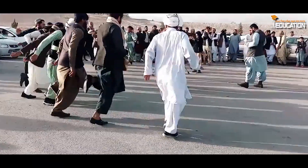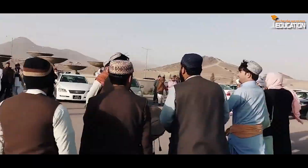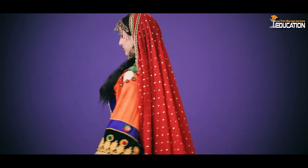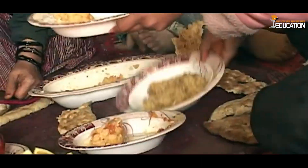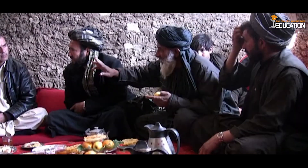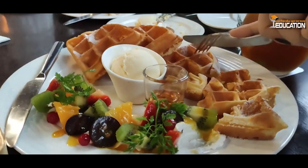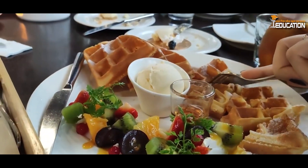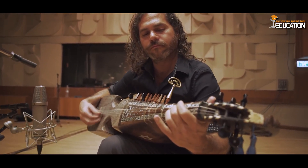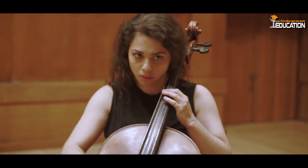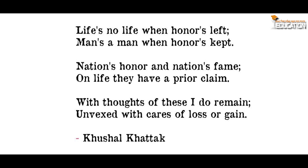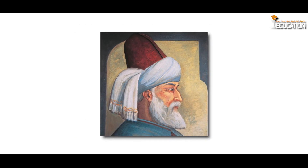Afghanistan has a rich and diverse culture that has been shaped by its history and geography. The country has been a crossroads of trade and culture for centuries, influenced by a variety of different civilizations. One of the most important aspects of Afghan culture is its strong tradition of hospitality, known as Milmastia. This tradition is deeply ingrained in Afghan society and is considered a fundamental aspect of the culture, extended to guests and strangers regardless of their background or status. Afghanistan also has a rich history of art, poetry and music. The country's traditional music is known for its use of a wide range of instruments including the rubab, sitar and tabla. Afghan poetry is also an important part of the culture, with many famous poets having emerged from the country.